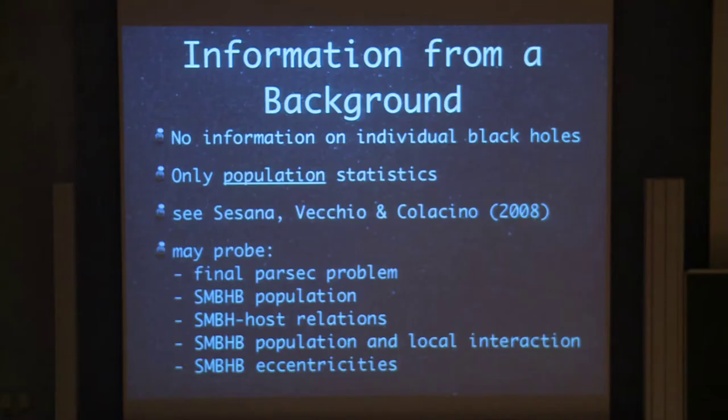Now, the problem if we do detect a gravitational wave background as opposed to a single source, is that we can't really derive any information on an individual black hole, which might be a bit disappointing for most of you, but we should be able to get population statistics out. I think the best paper to look at in that context is still this one from 2008, Sesana, Vecchio, and Colacino. Just to give you the brief summary, it's population statistics, no individual black hole measurements.